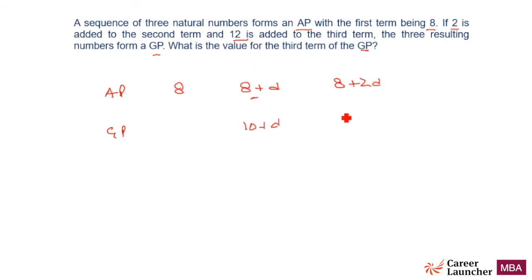And 12 is added to the third term: 20 plus 2D. We want to find the value of the third term of the GP. Now first of all, can you notice this? You don't have to apply the formula. This is doubling - 10 plus D times 2. So what does it mean? The common ratio is equal to 2.